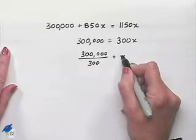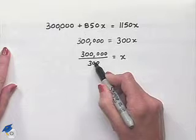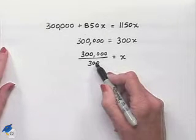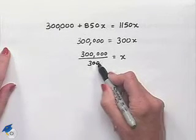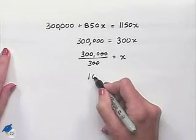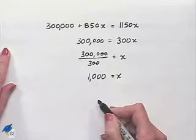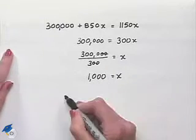Now let's divide both sides of the equation by $300. That would be $300,000 divided by $300 equals x. Well, notice that we can reduce by dividing both numerator and denominator by 100. That would cancel out the last zeros, and now we're looking at $3,000 divided by 3, which is going to give us 1,000.